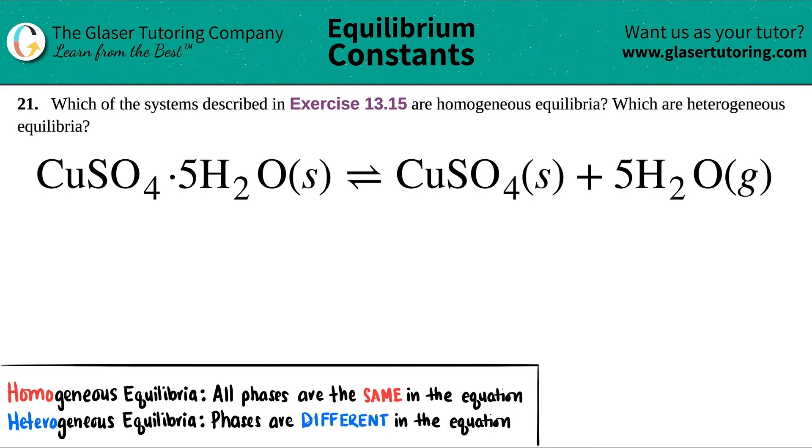Number 21. Which of the systems described in exercise 13.15 are homogeneous equilibria and which are heterogeneous equilibria?